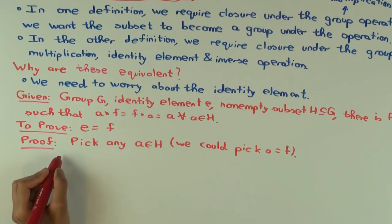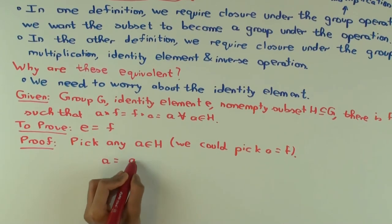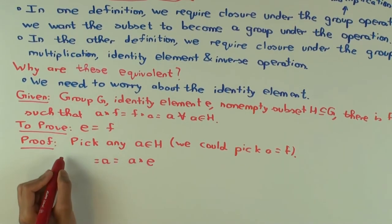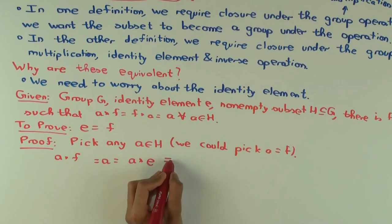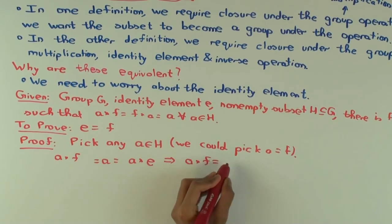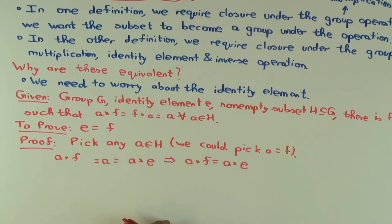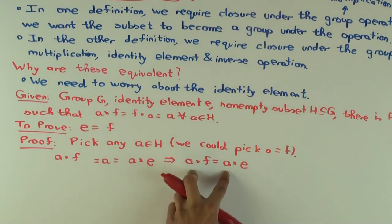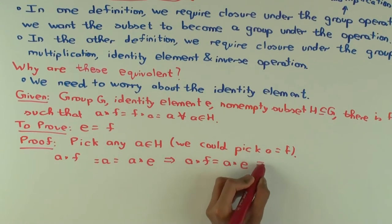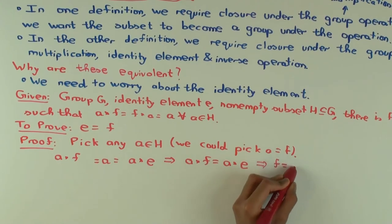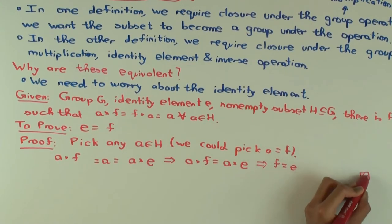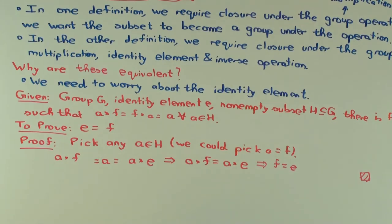We can write the element A as A*E. But we could also write it as A*F, since F is an identity in H. So A*F = A*E. Now A is an element of a group, so it's left invertible, which means it is left cancellative. Therefore we get F = E. So we've shown that the identity element of any non-empty subset has to be the same as the identity element of the group.